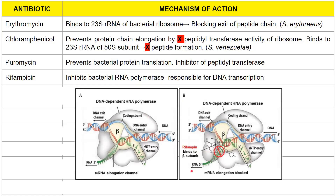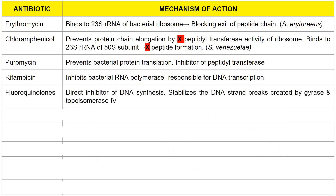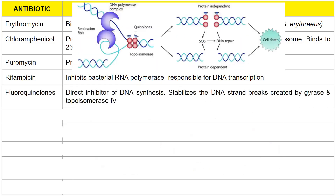Rifampicin blocks a portion of the DNA-dependent RNA polymerase so that elongation of the mRNA can no longer be done. Next are fluoroquinolones, which are inhibitors of DNA synthesis. They stabilize the double-stranded breaks created by gyrase and topoisomerase. Quinolones bind to topoisomerase, which relaxes the DNA, and stop the unwinding process so no more DNA can be replicated. Stabilizing double-stranded breaks prevents cell cycle progression, ultimately leading to cell death.